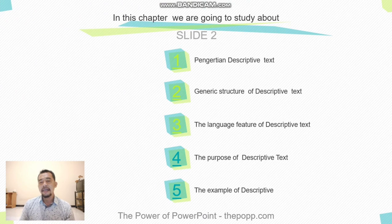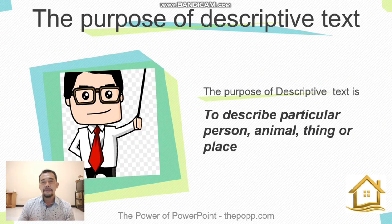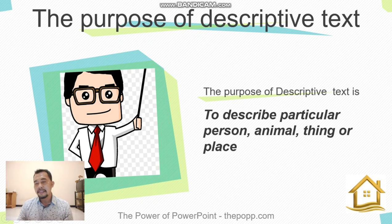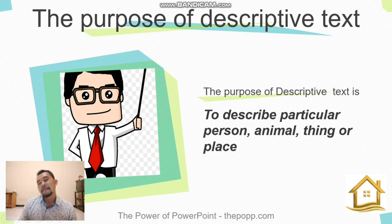Next, we will discuss the purpose of descriptive text. The purpose of descriptive text is to describe a particular person, animal, thing, or place. In Indonesian: tujuan dari teks deskriptif adalah untuk mendeskripsikan orang, binatang, benda, atau tempat secara khusus.